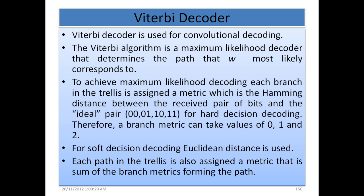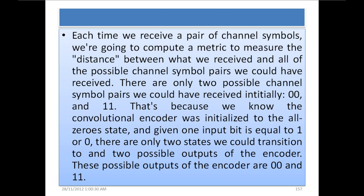Each path in the trellis is also assigned a metric that is the sum of the branch metrics forming the path. Each time we receive a pair of channel symbols, we compute a metric to measure the distance between what we received and all possible channel symbol pairs we could have received. Initially there are only two possible channel symbol pairs: 00 and 11.